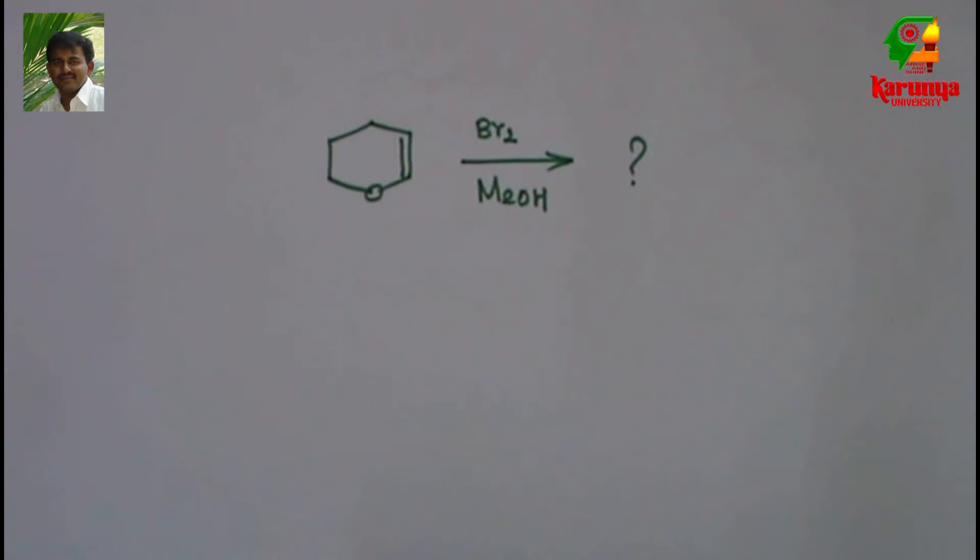Today I am going to solve a problem on bromomethoxylation of vinyl ether. You can find this problem in CSIR NET exam 2012.